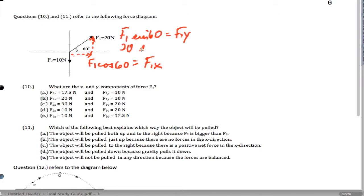So 20 times the sine of 60, that's going to work out to be about 17.3 newtons. And F1 cosine of 60, that's going to be 20 times the half, which ends up being 10 newtons.